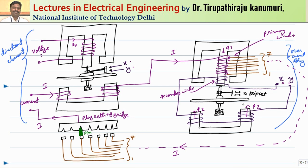The interaction of flux phi 2 and the primary flux phi 1 produces torque in the disk of the overcurrent relay. Whenever the current crosses the pickup value, the disk starts rotating and closes the trip circuit. The key point is: if the power is not flowing in the intended direction, the directional relay disk will not rotate, so contacts x and y remain open, keeping the secondary winding open-circuited. With phi 2 equal to zero, no torque is produced in the overcurrent relay even if current exceeds the current setting. The x-y contacts close only when the directional relay disk rotates, thereby adding the directionality feature.